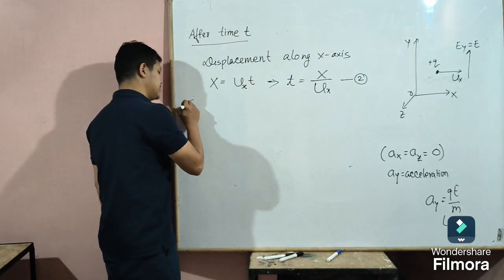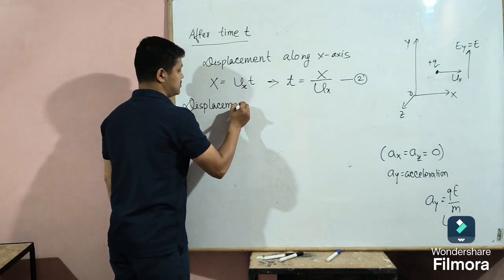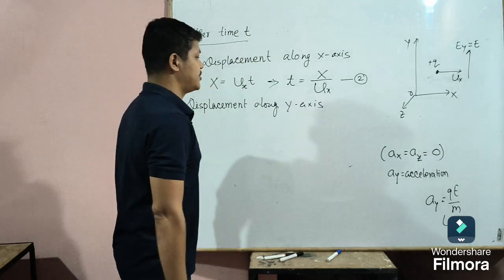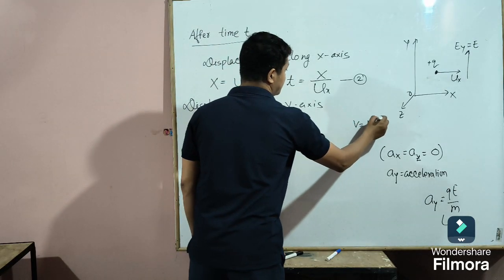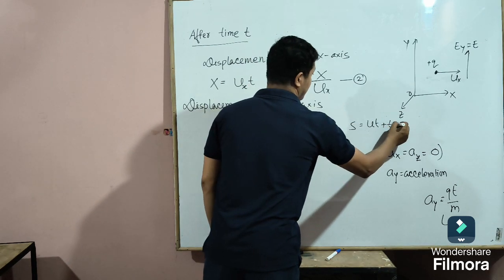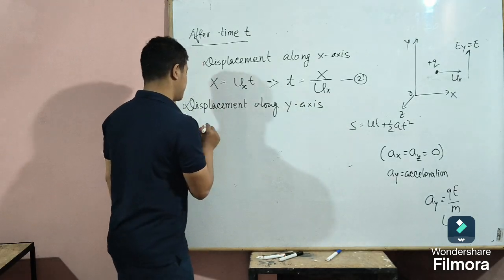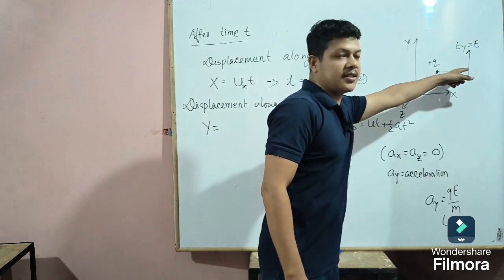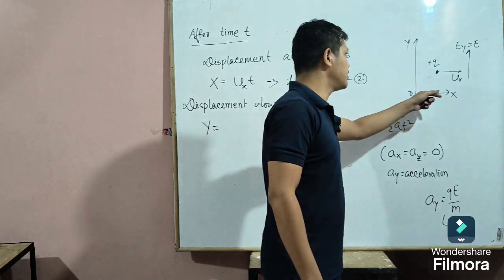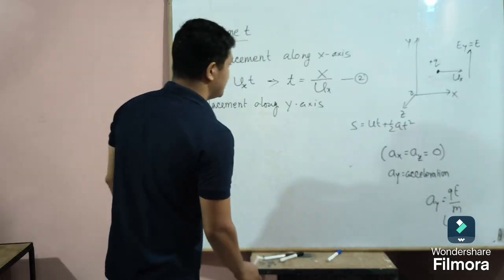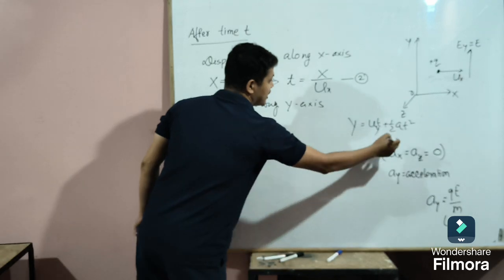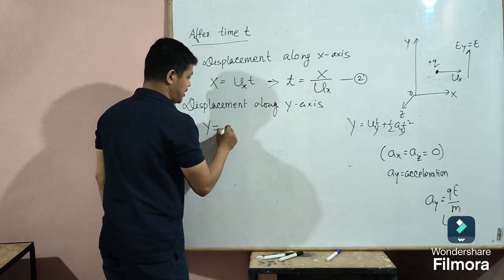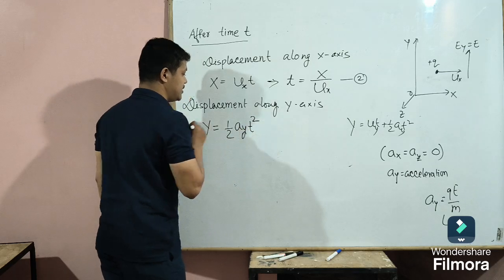Now, the displacement along the Y axis after the same time T: using the formula S equals UT plus half AT squared. For Y, since before entering the electric field the particle was moving along the X axis, there is no initial velocity along the Y axis — UY equals zero. So zero times T is zero, and the displacement along Y is simply half AY T squared.